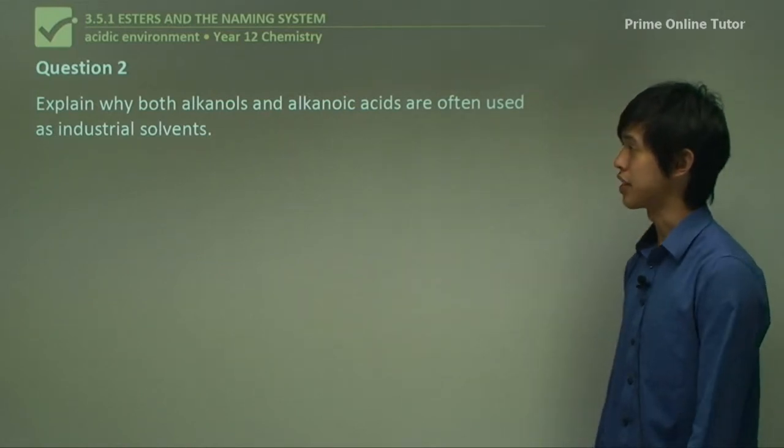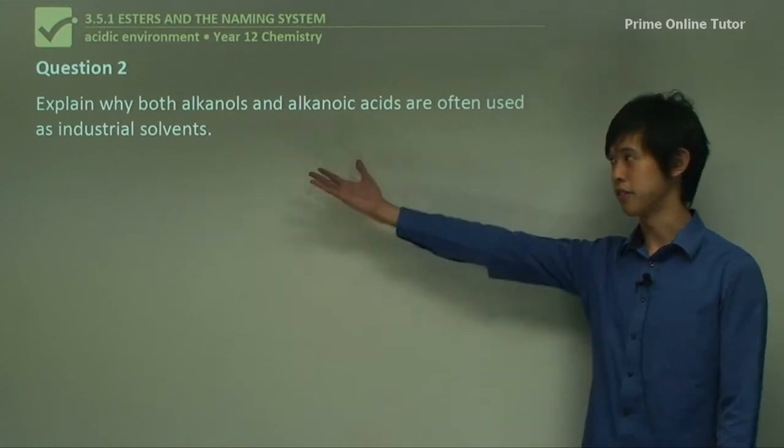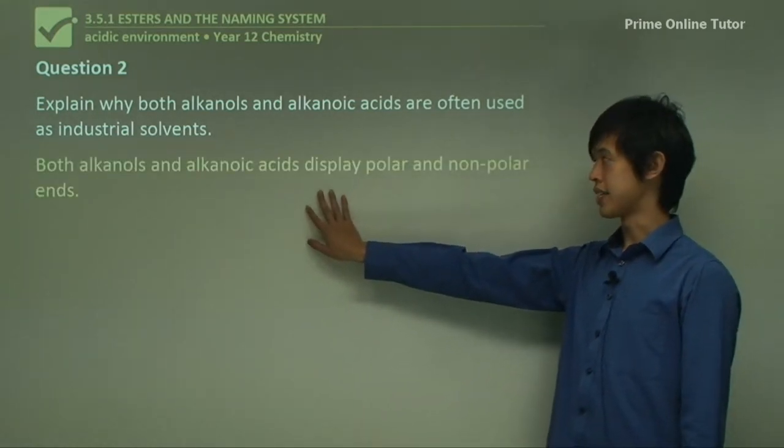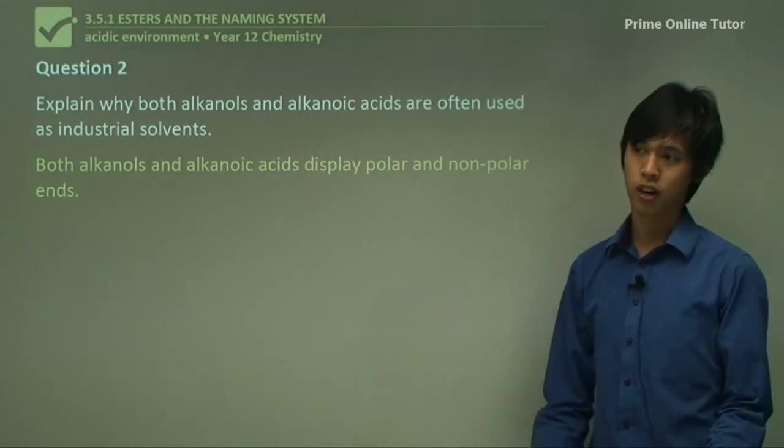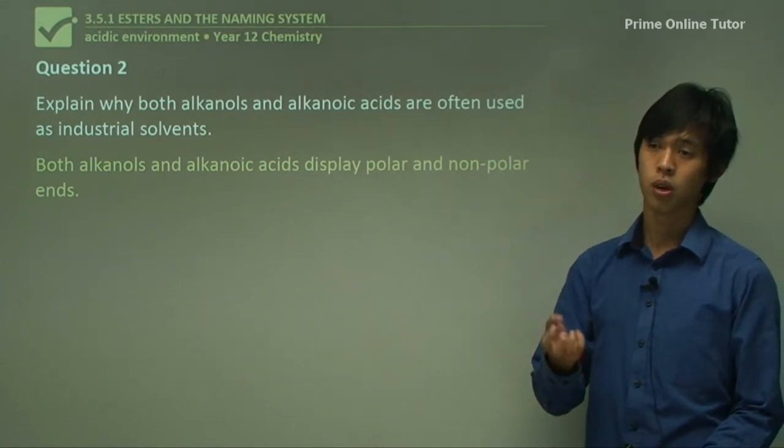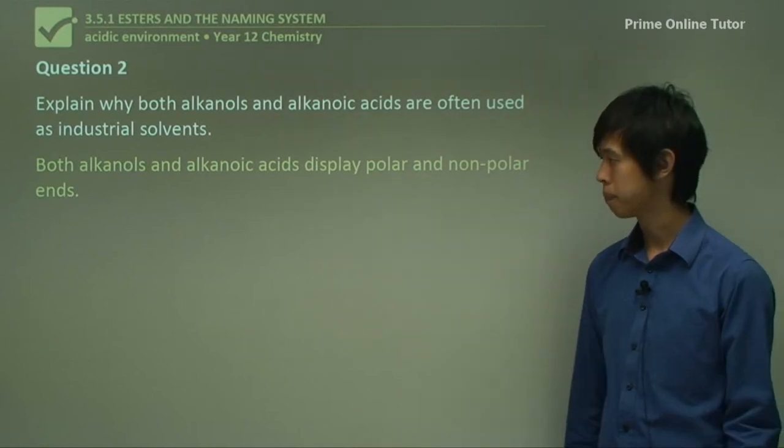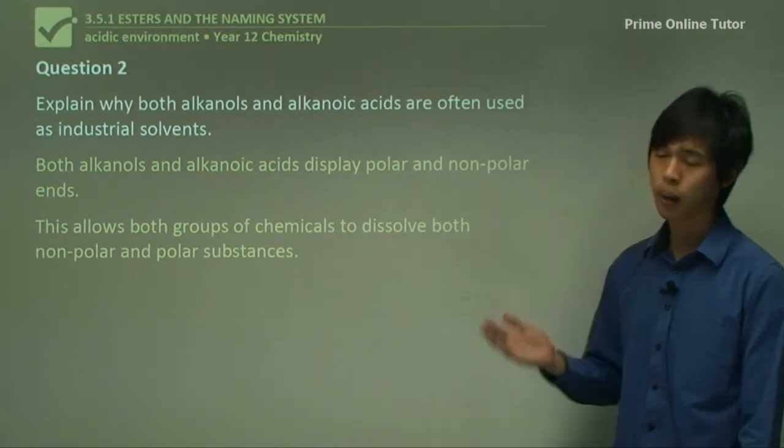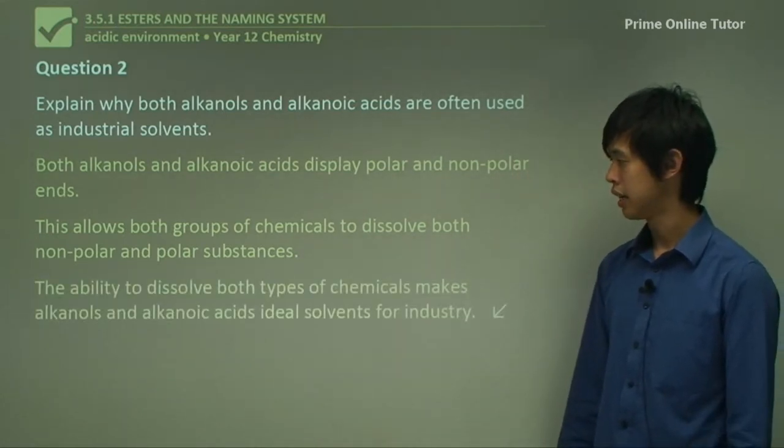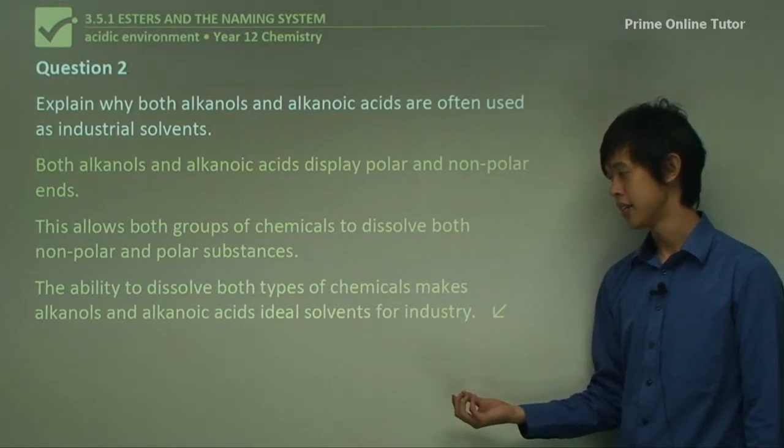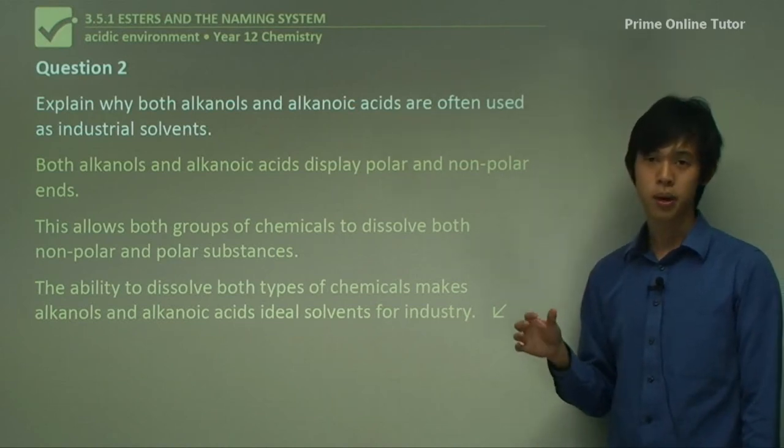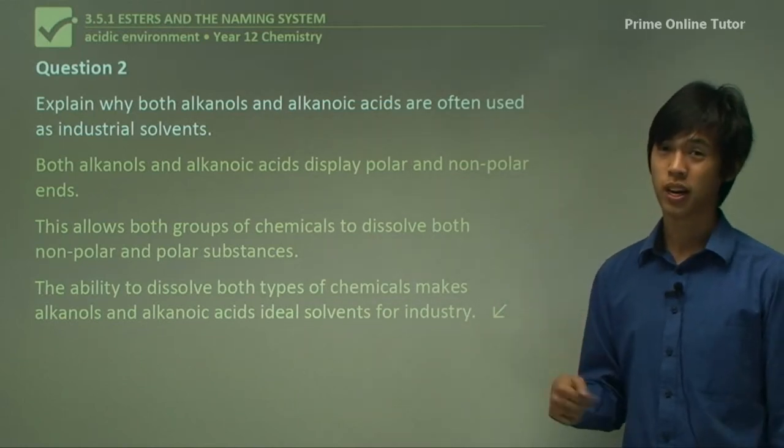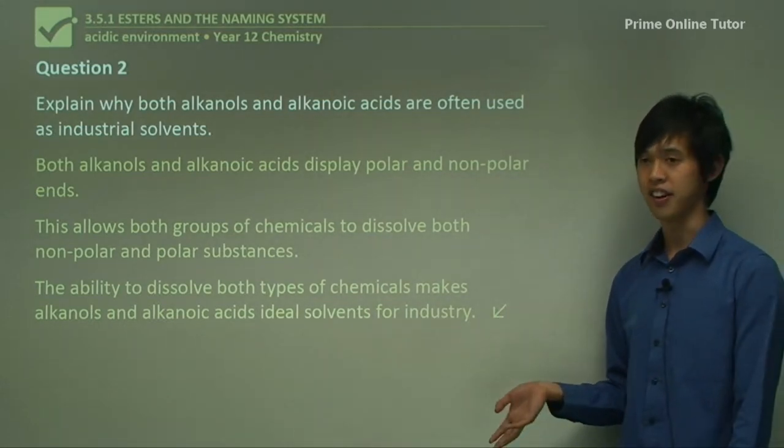Explain why both alkanols and alkanoic acids are often used as industrial solvents. Well, both alkanols and alkanoic acids display polar and nonpolar ends. The alkyl group is nonpolar, whereas the carboxyl or hydroxyl group are both polar. This allows both groups of chemicals to dissolve both nonpolar and polar substances. The ability to dissolve both types of chemicals makes alkanols and alkanoic acids ideal solvents for industry. If I can dissolve both nonpolar and polar substances with the same chemical, I might as well do so. It saves me having to buy another chemical. That's why often they're used as industrial solvents, because they can be applied to many different chemicals rather than just one.